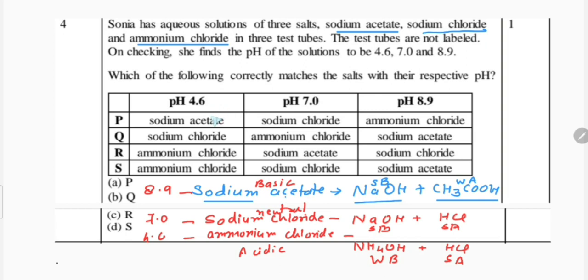Accordingly, you can arrange: 4.6 should be ammonium chloride. So P and Q have already been eliminated by seeing only the first column. In R and S, ammonium chloride is at both places, so maybe R is correct, maybe S is correct.